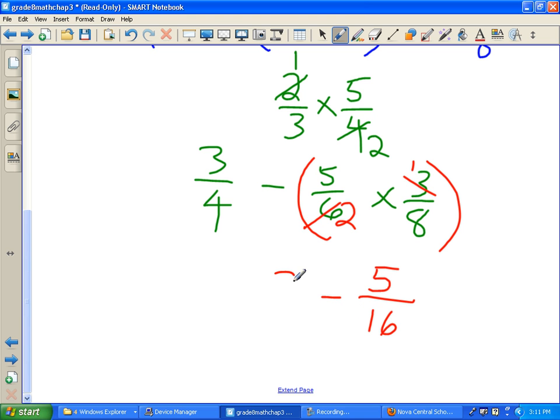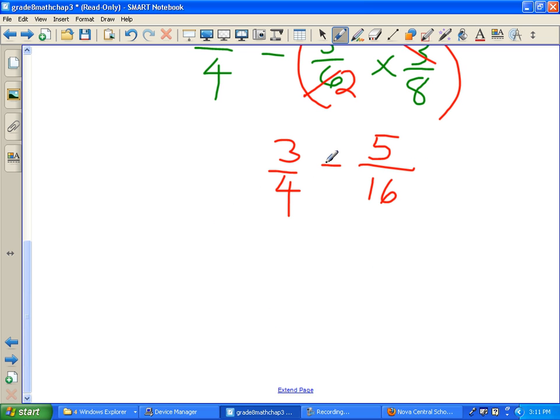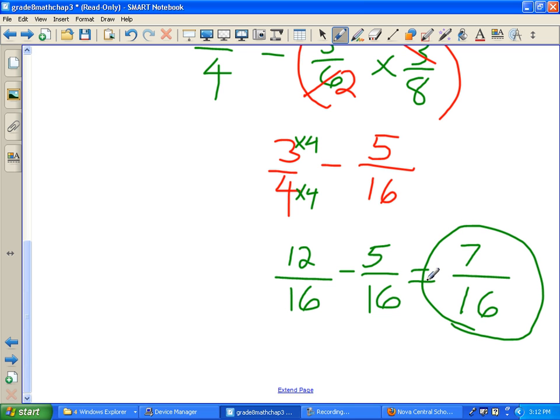And rewrite everything we had there before. Now the last step is to subtract. That's the only thing we have left. But how can we make the bottoms become the same? Well, if we times 4 times 4, it'll give us 16. So we'll do the same for the top. 3 times 4 is 12. 4 times 4 is 16. And then we're going to subtract 5 over 16. And then it's just a matter of 12 subtract 5 is 7, and then 16 remains on the bottom. And there's our final answer.